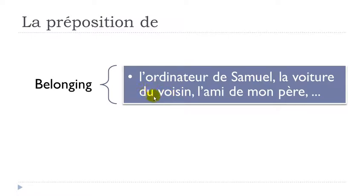It can also be: la voiture du voisin — the car of the neighbor. Voisin means neighbor. Here de is combined with the article le, giving du. Another example: l'ami de mon père — my father's friend. So it's really this belonging concept — something or someone belongs to something or someone else.